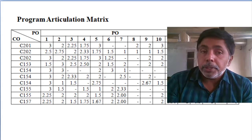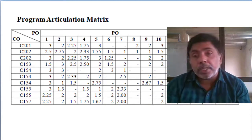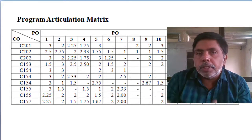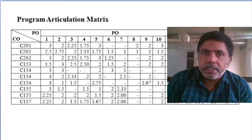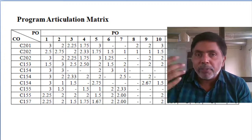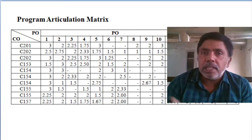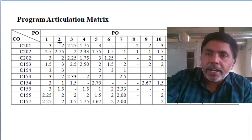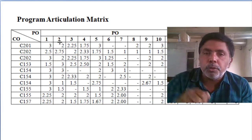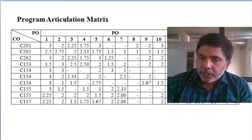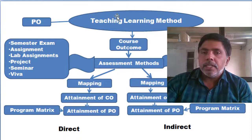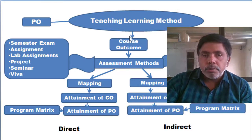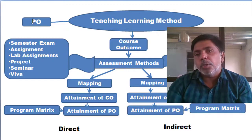Across all subjects — subject one, subject two, subject three — completing each subject contributes a percentage toward program outcome fulfillment. How much percentage the student actually fulfilled versus our target is determined by assessment. This is the teaching-learning methodology: attaining course outcomes leads to attaining program outcomes.